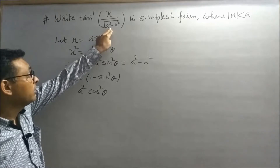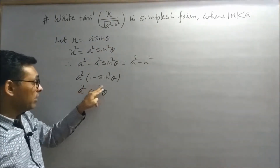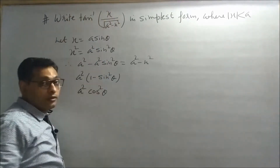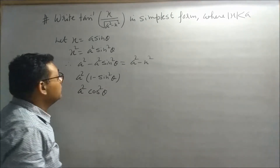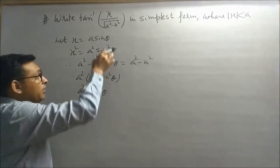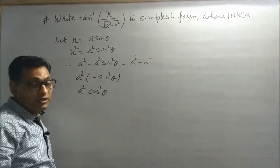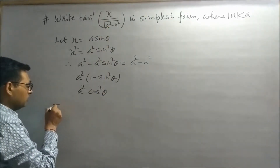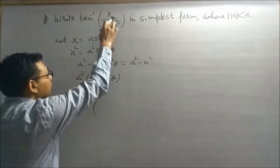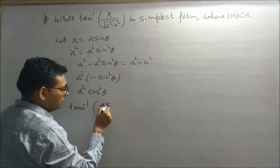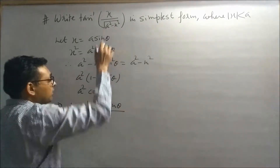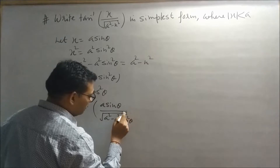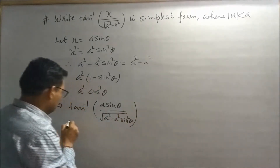So the denominator √(a² - x²) becomes √(a² cos² θ). The square root cancels the square, giving us a cos θ. Now for the numerator: x was supposed as a sin θ, so the numerator is already in sin form — it is a sin θ. So we can easily change this part into tan form.